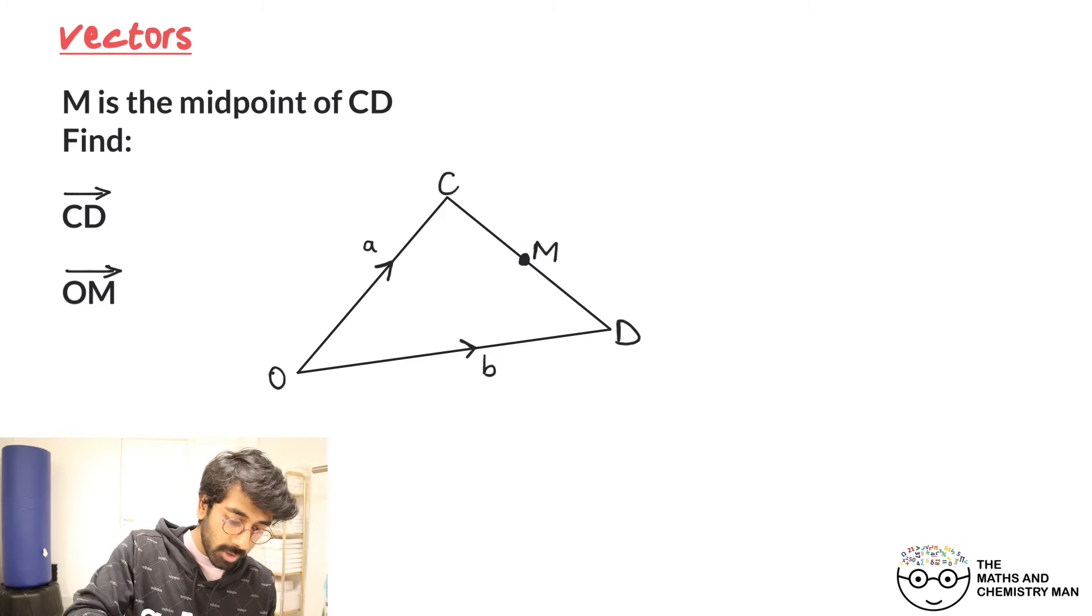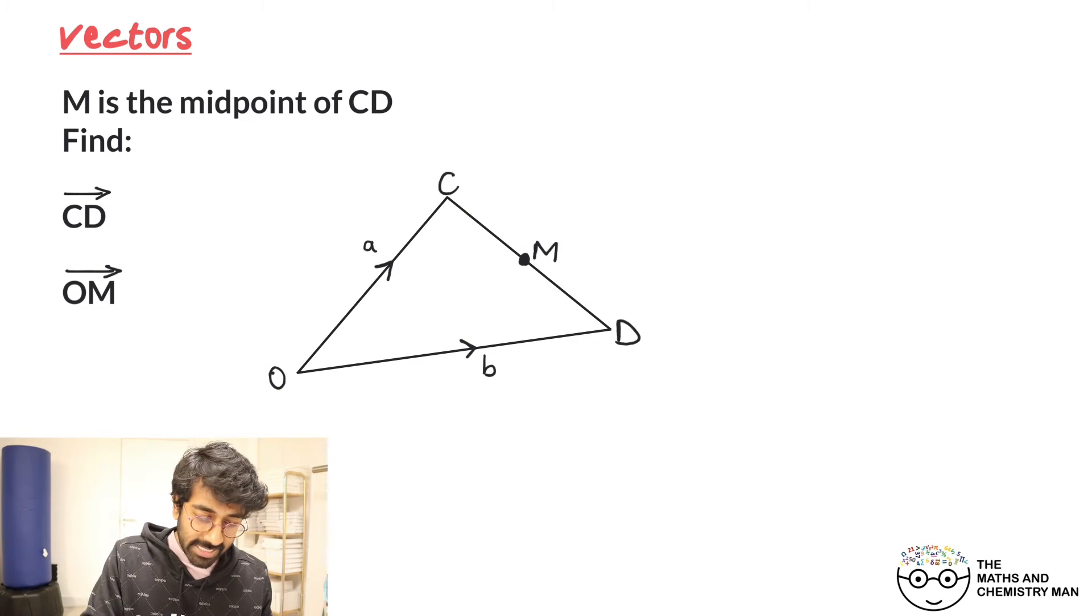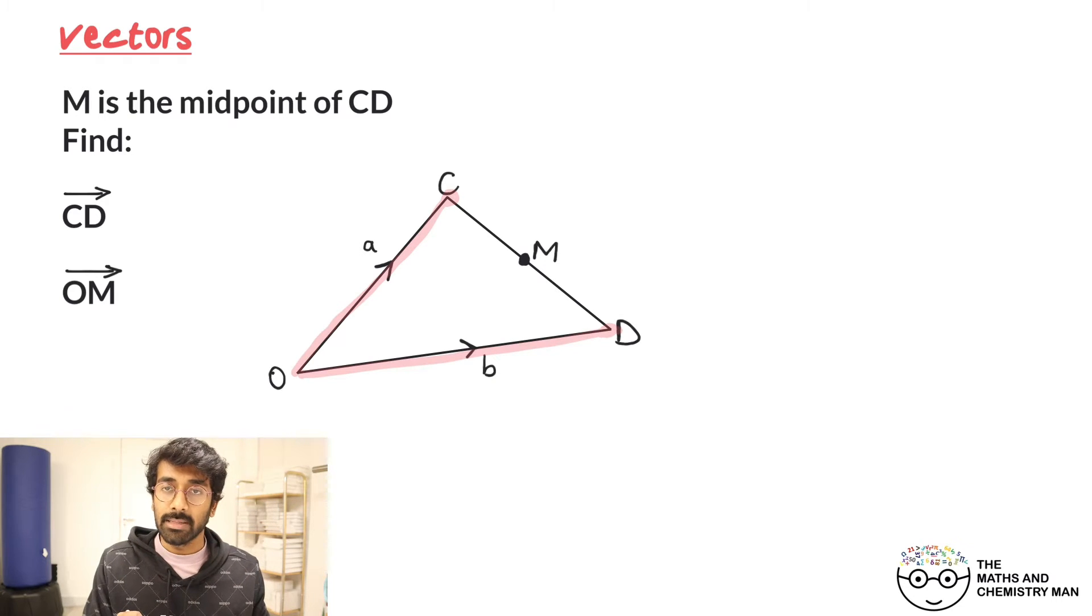Okay, let's go. The first thing we need is CD. I think what we need to do is pick a route. I always pick a route. Here's C and we need to get to D. The best way to go is to go back to O and then from O to D.